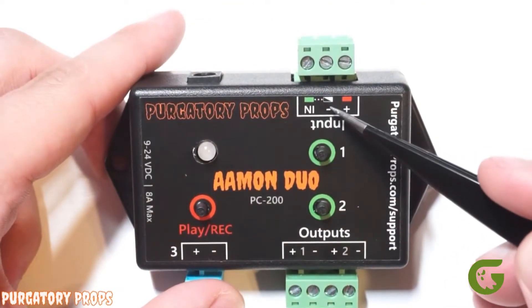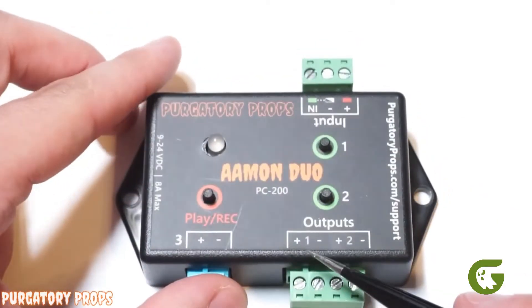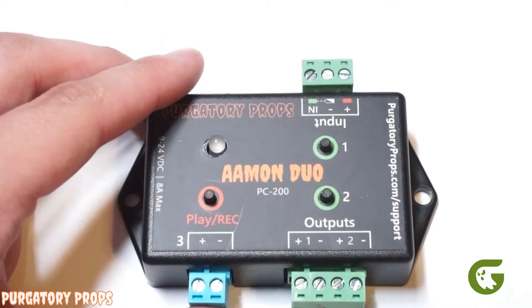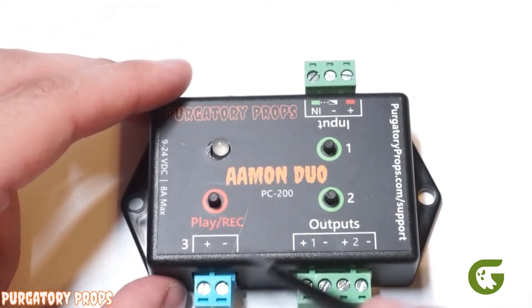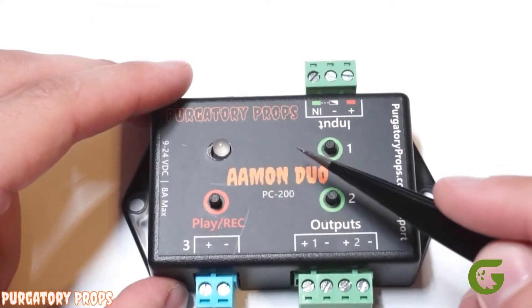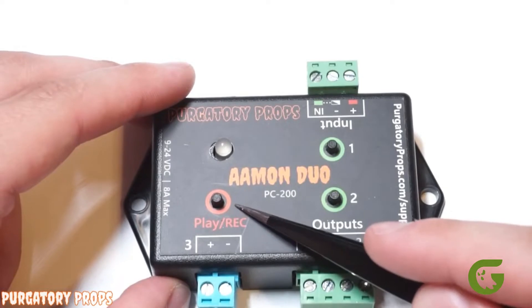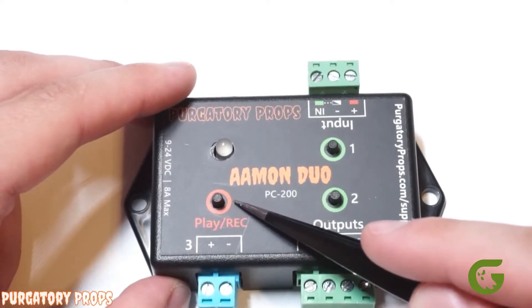To get the controller to trigger you need to connect the negative to the end. Down here we have our output terminals so you have positive and negative for output one and positive and negative for output two, and over here we have that special third output. On the top here we have a status LED and then the play record button, which is used to either play your animation or record it.